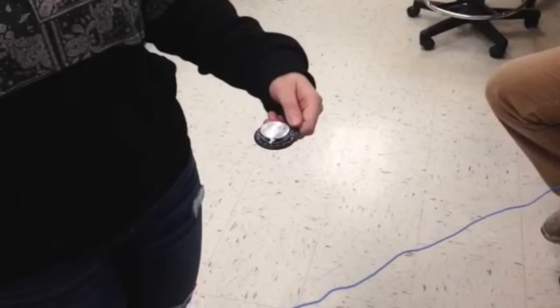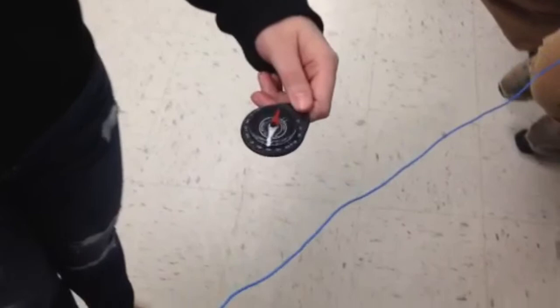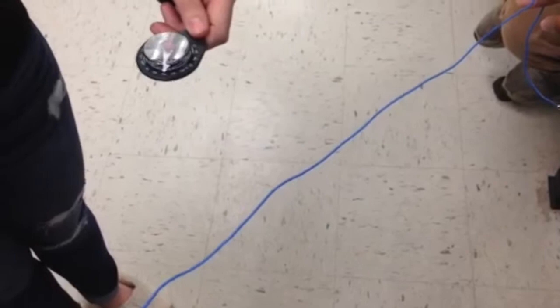Compasses work because of the magnetic field from the Earth, which goes from north to south. These field lines align with the compass. However, the magnetic field lines from the enclosed current in the wire interferes with the compass and can cause it to deflect and not point north anymore.